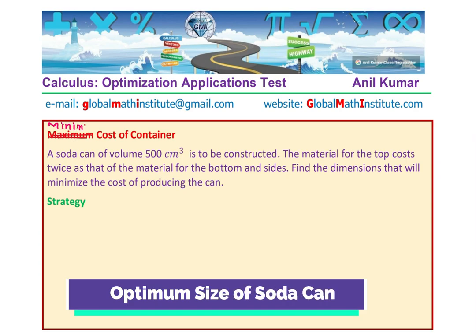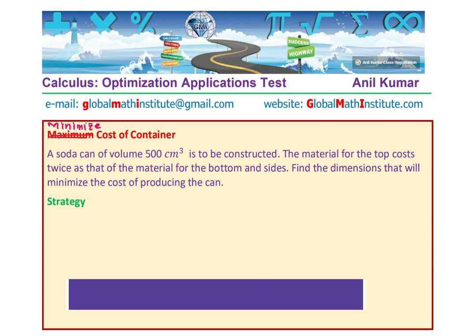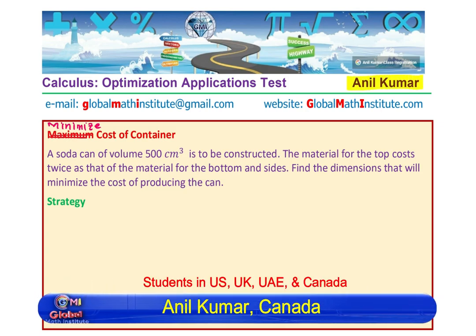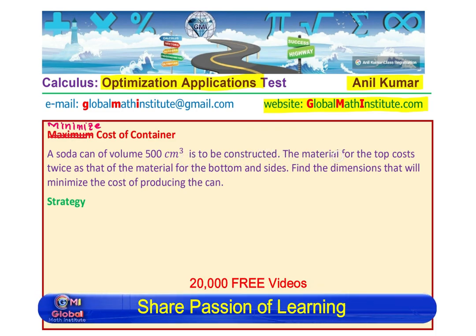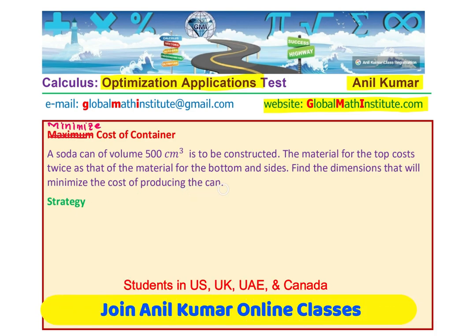How do we find the dimensions of a cylindrical can to give minimum cost? That is what we are going to discuss. Welcome to my YouTube channel and the website Global Map Institute. In this playlist, we are going to discuss a very important question based on optimization application. A soda can of volume 500 centimeter cube is to be constructed. The material for the top costs twice as that of the material for the bottom and sides. Find the dimensions that will minimize the cost of producing the can.